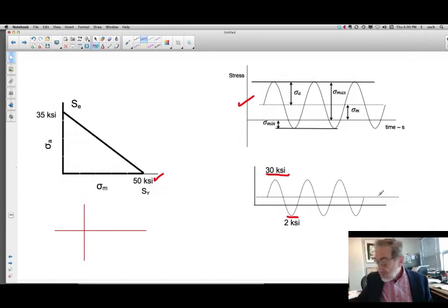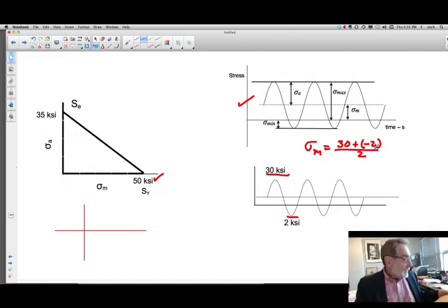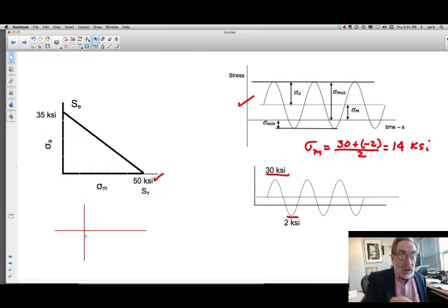Now my mean stress here then is not at zero. So my mean stress is equal to the max 30 minus the min, or plus the min which is a minus 2, over 2, and I get 28 over 2 and that's 14 KSI. So if I take my mean thing here, this is 10 and this is going to be about 14, so we're going to plot then vertically on that line what our alternating stress is.